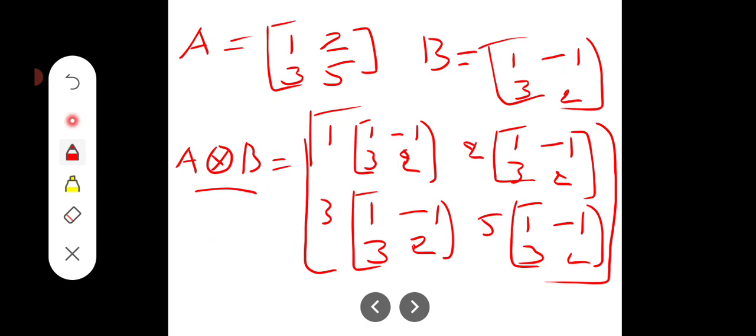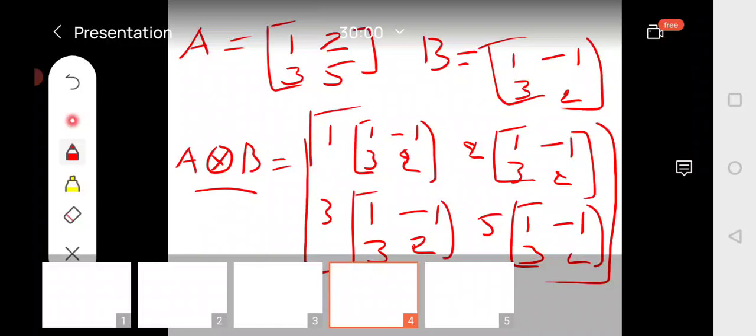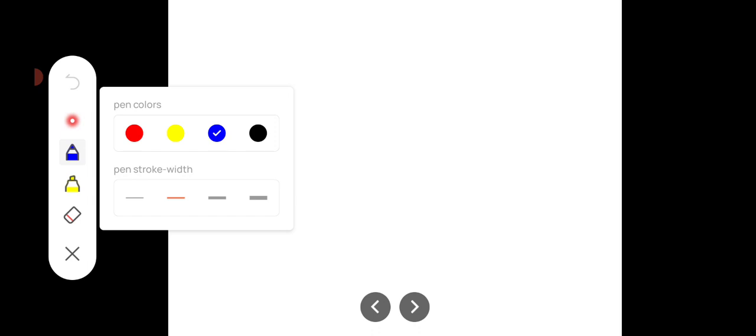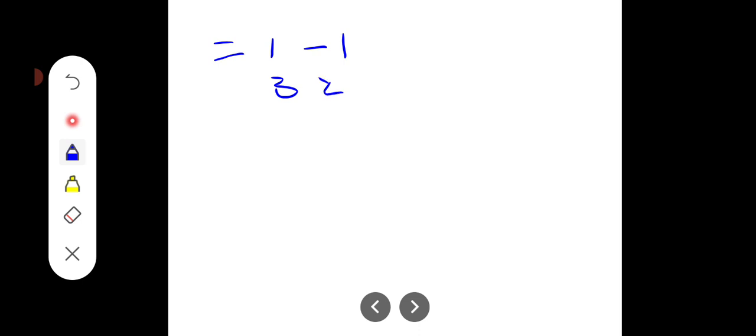If you see the answer for this, what is the first value? 1 into the product of that one, right? 1 into 1, 1 into -1, 1 into 3, 1 into 2. So this matrix is the repetition of that, which is equal to [1, -1; 3, 2]. This value is the same. After that, the matrix is multiplied with 2.